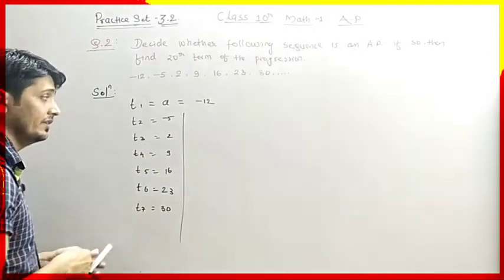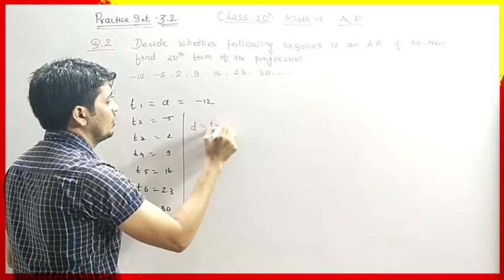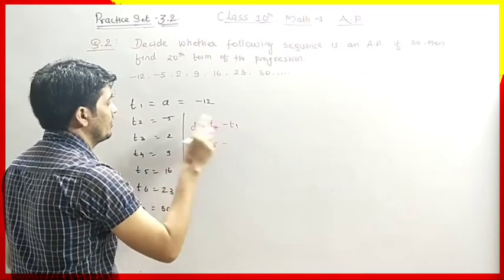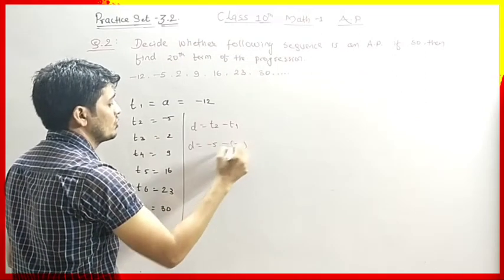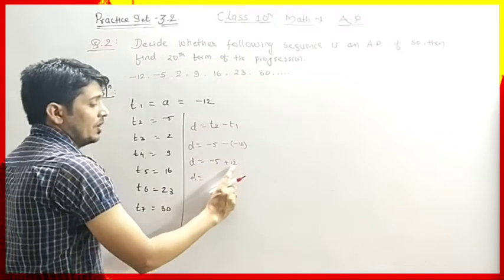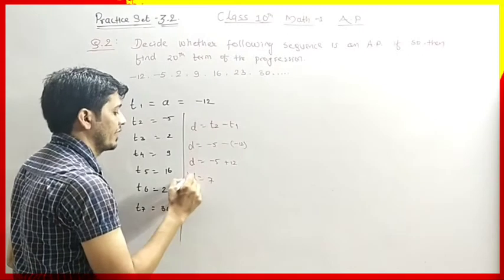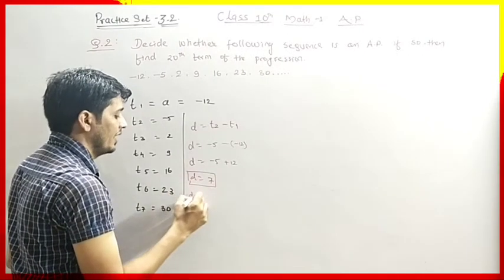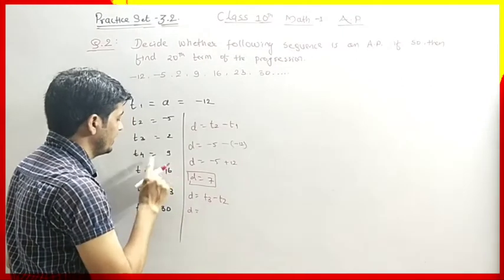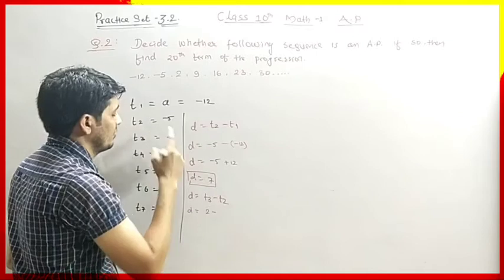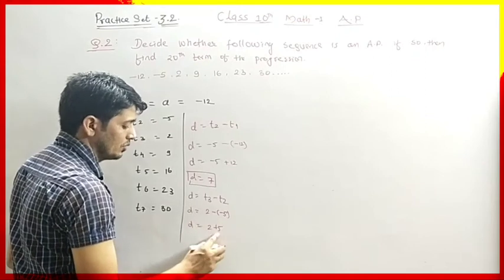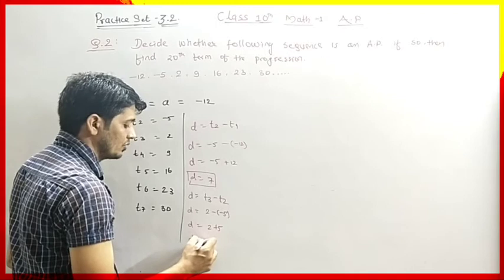We calculate D. D equals T2 minus T1, so D equals minus 5 minus minus 12. Minus into minus is plus, so D equals minus 5 plus 12, which gives D equals 7. Next, D equals T3 minus T2, so D equals 2 minus minus 5. That gives 2 plus 5, so D equals 7 again.